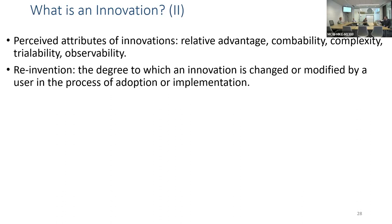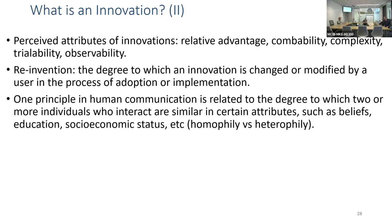Rogers mentions that for some reason we assume innovations are typically technological in nature, but they don't have to be. The attributes of an innovation include: relative advantage, compatibility, complexity (simpler vs. more complex), trialability, and observability—can I see someone else using it? Rogers also introduced the concept of reinvention, which in the implementation science world would be called adaptation, noting that farmers sometimes used chemicals in different ways than prescribed.